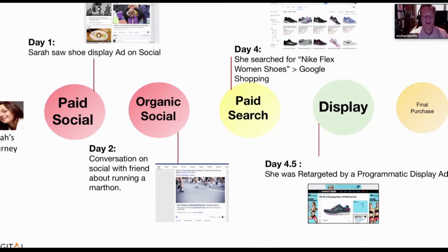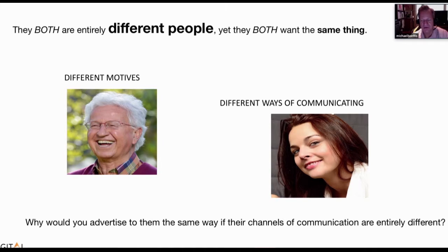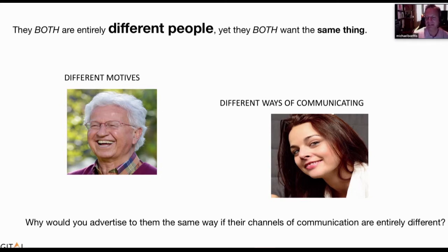It's all very important to understand these content opportunities based on how different each persona is. They're both entirely different people, yet they both want the same thing. They have different motives and different ways of communicating. So you have to ask yourself: why would you set up a campaign with the same strategy to advertise to different people if their channels of communication are completely different?